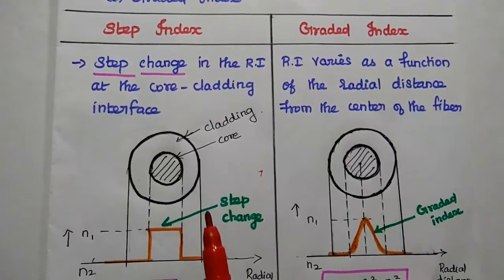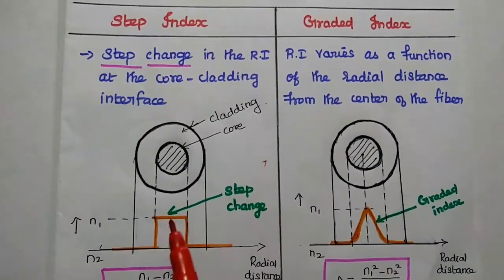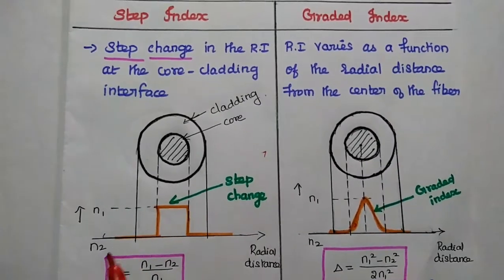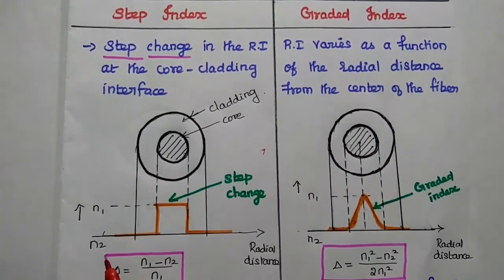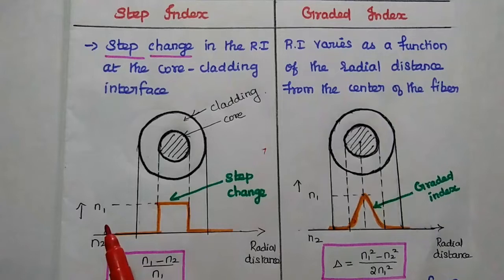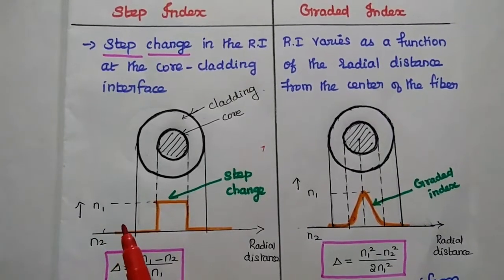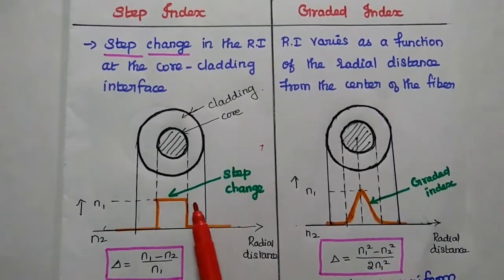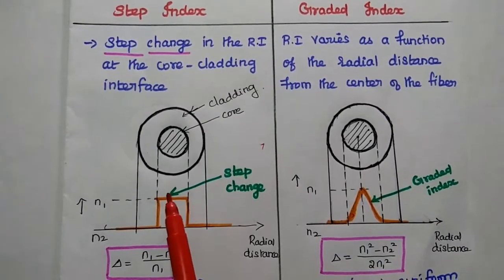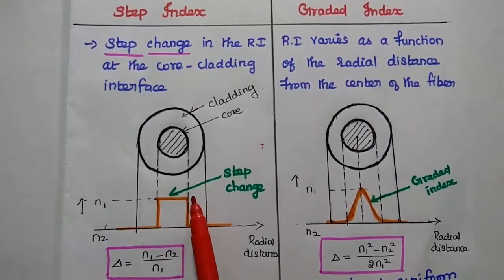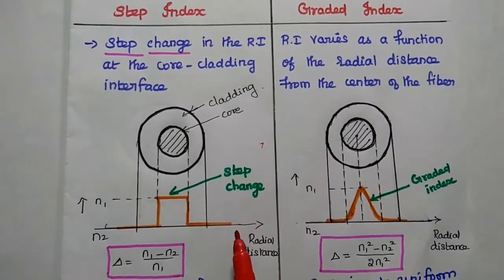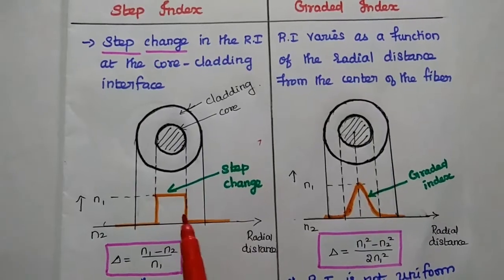In this step index fiber, there is a step change in this refractive index. Here N2 is the refractive index of the cladding, N1 is the refractive index of the core. Here this refractive index is uniform within this core. That is called as step change. It forms step size, that is why it is called as step index.